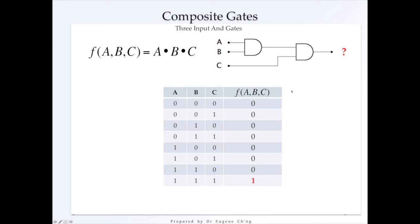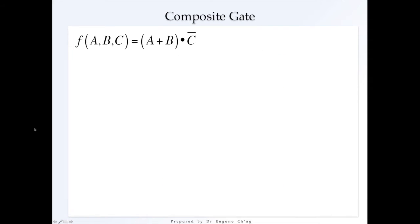Now, let's look at another composite gate. This time, it's A OR B and NOT C. The best way, in fact, is to use Boolean algebra.